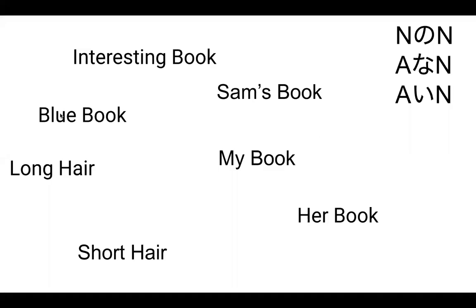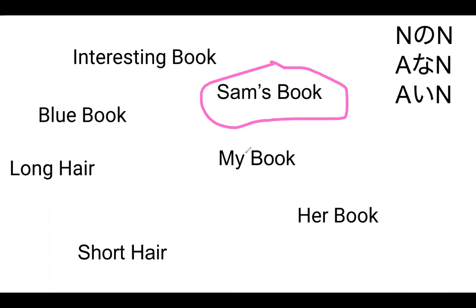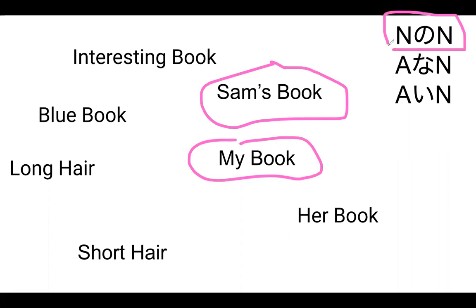So I have a couple of examples here. What is this in English? 'Sam's book.' And what is this? 'My book.' Both of these are examples of noun-no-noun. Even though 'my' is a noun, it doesn't have the possessive 's' that 'Sam' gets. And how about this one? 'Her book.' That's another example of noun-no-noun.